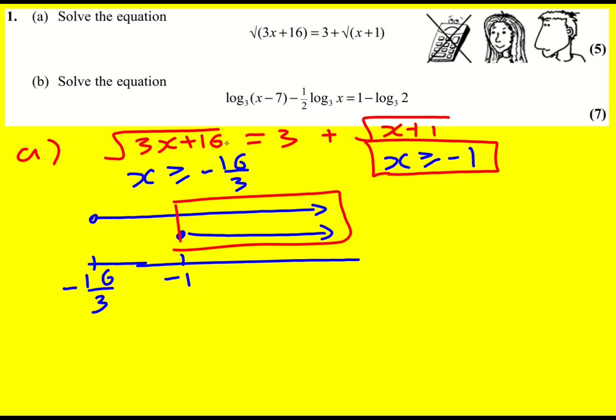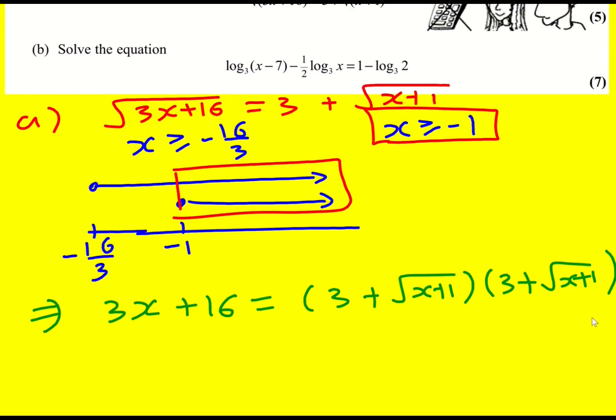What can I do here? I've got square roots. What I'm going to do is square both sides. That's how you can solve this equation. So 3x plus 16, I can just square that straight away. Is it going to equal 3 plus the square root of x plus 1 times 3 plus the square root of x plus 1? This one's a bit more awkward.